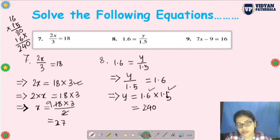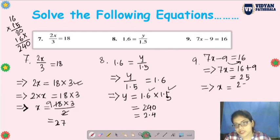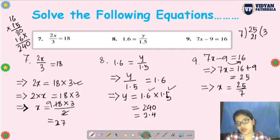The next question is 7x minus 9 equals 16. So 7x equals 16 and 9, when it goes this side, becomes plus 9, that is 25. And then x equals 25 by 7. You can write it in mixed fractions like this: 7 threes are 21, remainder 4. So it equals 3 and 4/7.